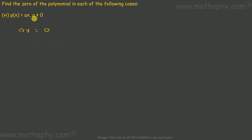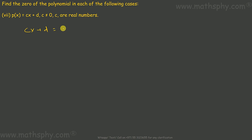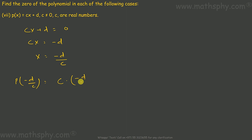For ax equals to zero, it says a should not be equal to zero. So x would be zero over a, meaning x is equal to zero. If I replace x with zero here, it will be a into zero, which is zero. It says a should not be equal to zero, but x comes out to zero. For cx plus d equals to zero, cx would be minus d, so x would be negative d over c. If you replace x with negative d over c, this will be c into negative d over c plus d. The c's cancel, giving minus d plus d, which gets you zero. So the zero for this polynomial would be negative d over c.